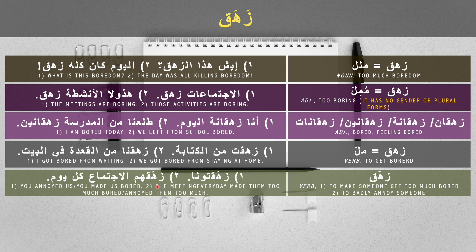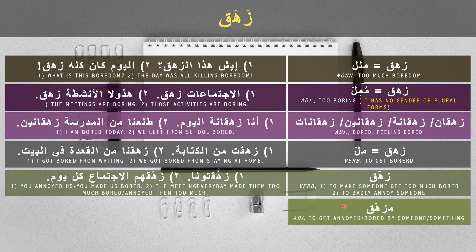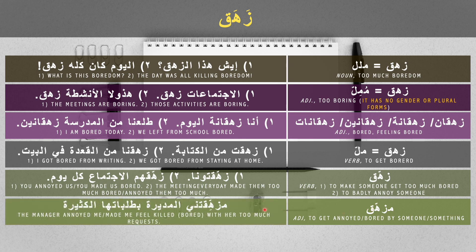This form functions similarly to an adjective or an ism maf'ul in Arabic, which can also function as a verb. So if you want to say you got bored or annoyed by someone, you could say, for example, that the manager annoyed me or made me feel killed by boredom with her too many requests.